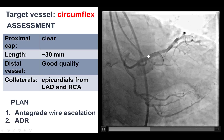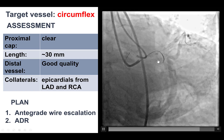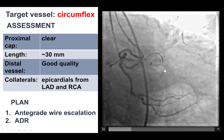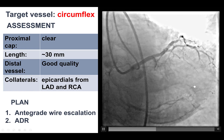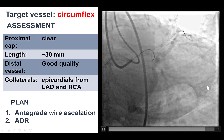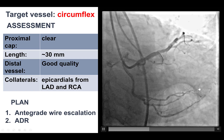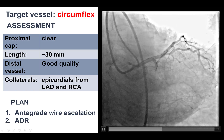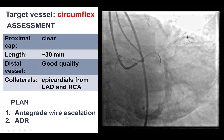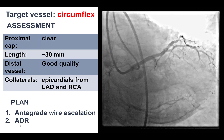Looking at the characteristics of the CTO of the circumflex on dual injection, there is a well-defined proximal cap, length of about 30 mm, and good quality distal vessel filling via epicardial collaterals mainly from the LAD but also from the right coronary artery. Those collaterals were not deemed to be interventional, therefore the plan was to proceed with anterograde wire escalation, and if that did not work, to use anterograde dissection and re-entry.